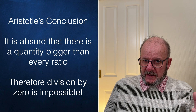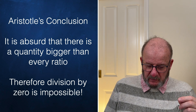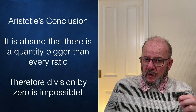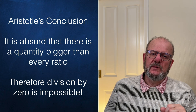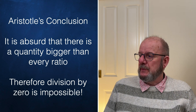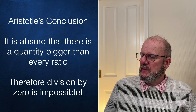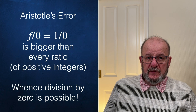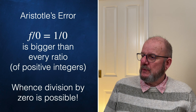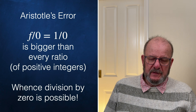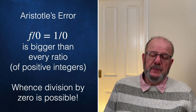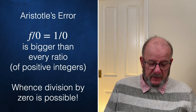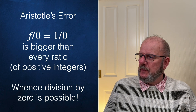Analysis of the texts that Aristotle wrote — I'll put a link in the description below — suggests that it was common knowledge in 300 BC that division by zero was impossible. The ancient Greeks were of course wrong on that point: division by zero is possible. Aristotle's error was to say that it's impossible for f over zero to be bigger than every ratio. But we know from transreal arithmetic that it is precisely the case: f over zero equals one over zero, and that is bigger than every ratio of positive integers. I'll put an end card to the proof and a link in the description below. Since 300 BC people have believed that division by zero is impossible, and it would be a good idea if the world would catch up with mid-20th century mathematics.